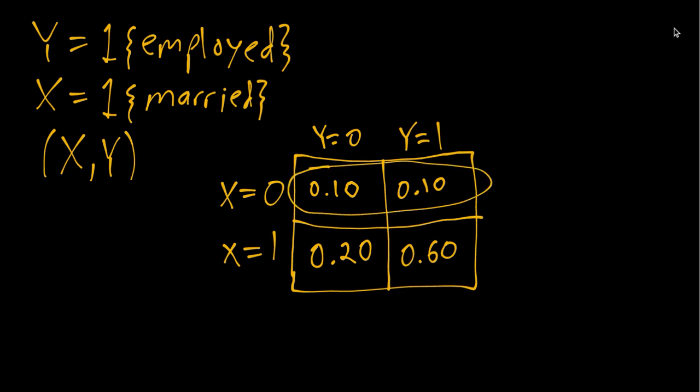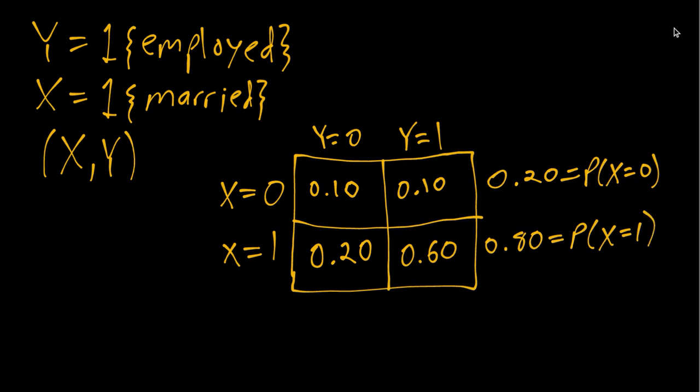The rows to get the marginal distribution of X, or the unconditional distribution of X. So if we add the first row, we get 20 percent as the probability that X equals 0. If we sum across the second row, we get 80 percent as the probability that X equals 1. So these two marginal probabilities together give us the marginal distribution of X.